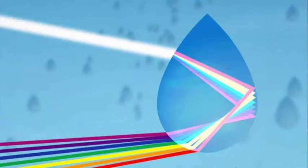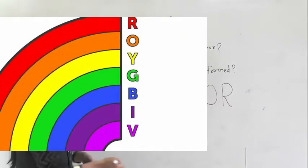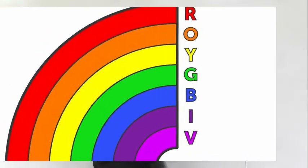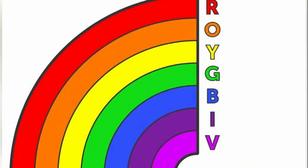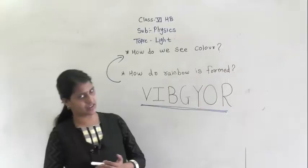What are those 7 different colors? They are called VIBGYOR — that is, red, orange, yellow, green, blue, indigo, and violet. These are the 7 different colors. The white light splits into these 7 colors.